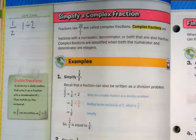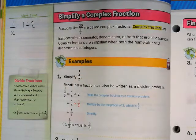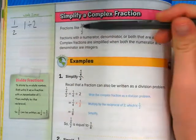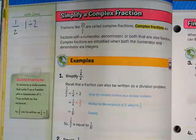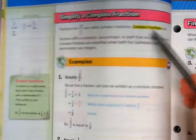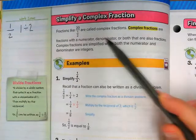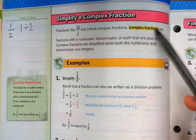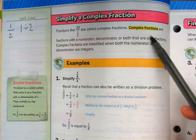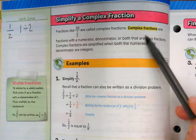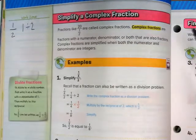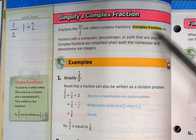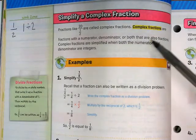The first thing we're going to talk about is how to simplify a complex fraction. Fractions like 20 over 1 3rd are called complex fractions. Complex fractions are fractions with a numerator, denominator, or both that also have fractions. We want to simplify complex fractions so that they look like normal fractions. They don't have fractions inside of fractions anymore.